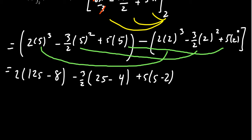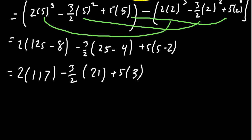You're going to get 125 take away 8, that is 117. Next, you get 25 take away 4, which is 21. And then lastly, 5 take away 2, which is 3. If we perform these multiplications, 2 times 117 gives us 234. 2 doesn't go into 21 evenly, but we can take 3 times 21 to get 63 over 2. And then 5 times 3 is 15.